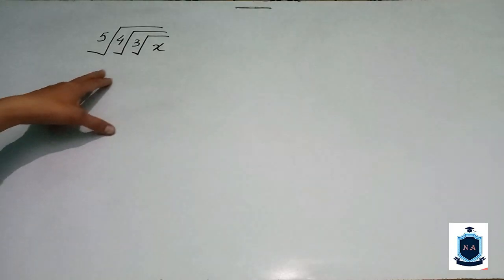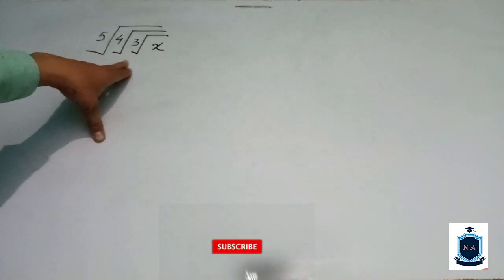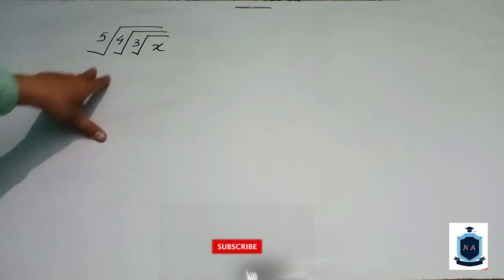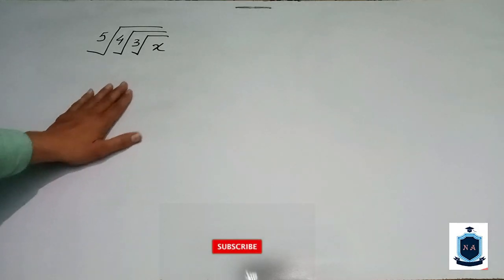How do you solve the triple under root power? Here you can see that x power is under root 3, then under root 4, then under root 5. How do you solve it if you see this type of question?